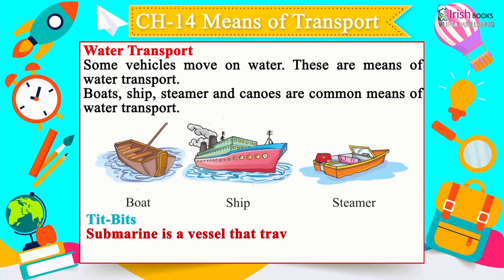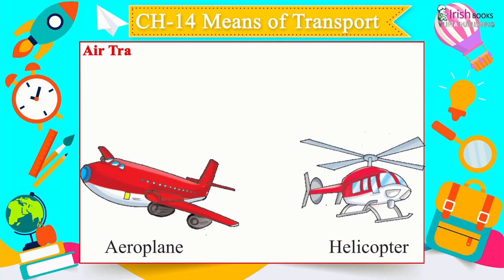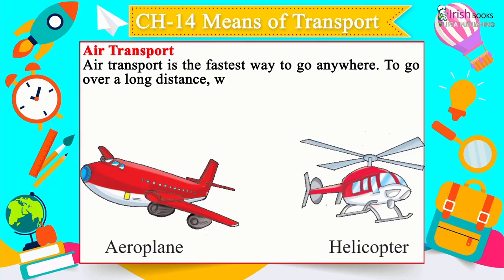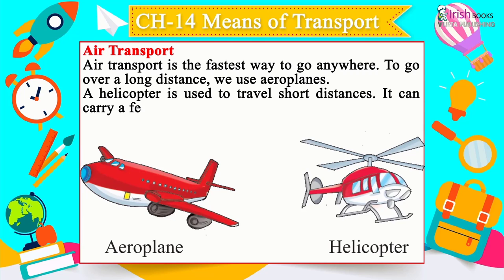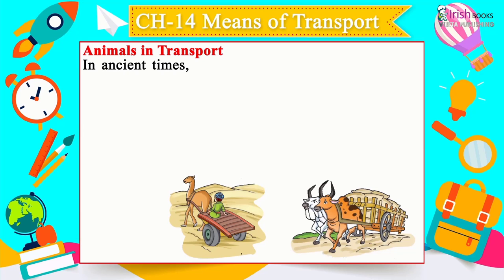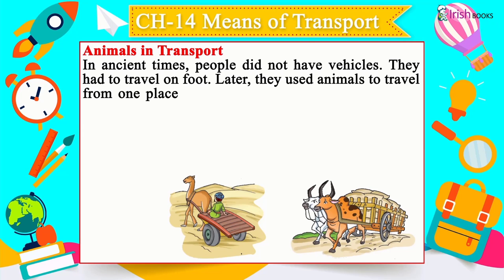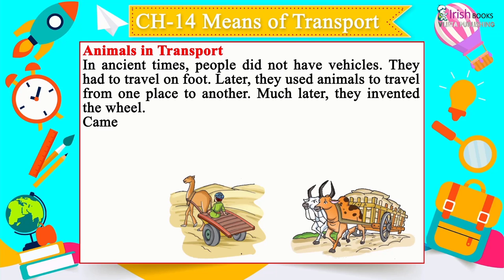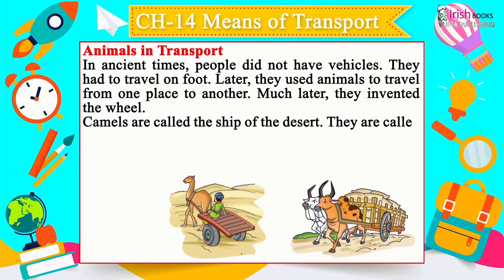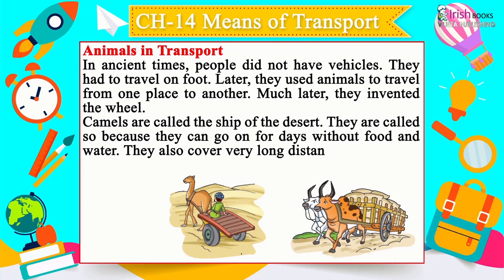A submarine is a vessel that travels underwater but is more of a defence vessel. Air transport is the fastest way to go anywhere — aeroplanes are used for long distances and helicopters for short distances. In ancient times, people travelled on foot, then used animals. Later they invented the wheel. Camels are called the ship of the desert because they can go for days without food and water and cover very long distances. Bullock carts are used in villages for travelling and carrying goods.